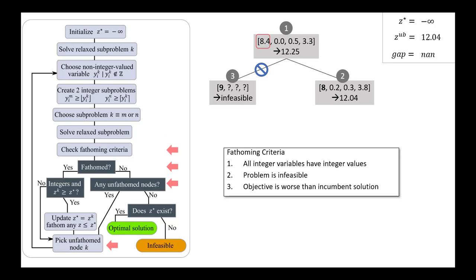So the next step is we need to look at our fathoming criteria and decide which of these branches we can fathom and get rid of. So let's refer back to the criteria that we discussed earlier. The three criteria are here. First, we have all integer variables have integer values. For subproblem 2, that's not the case. You see that the solution has 0.2, 0.3.